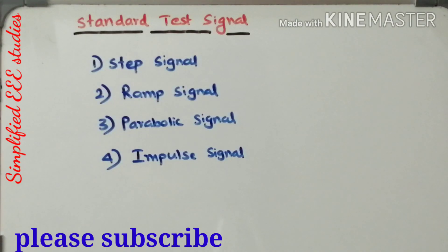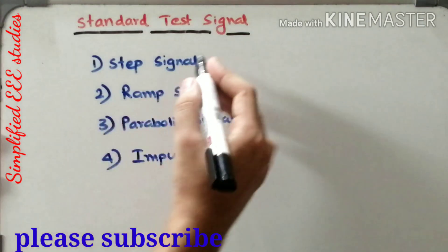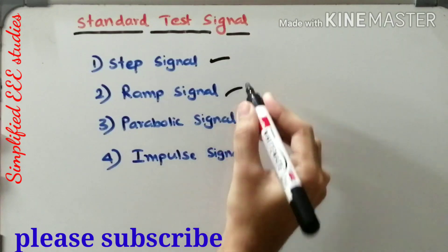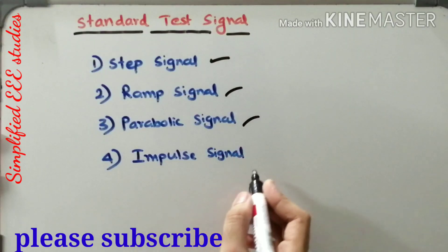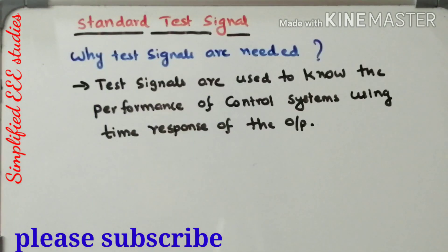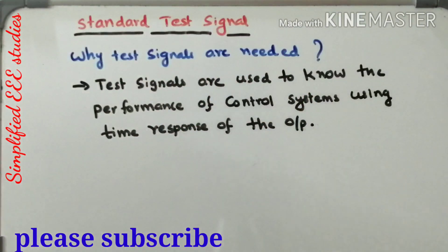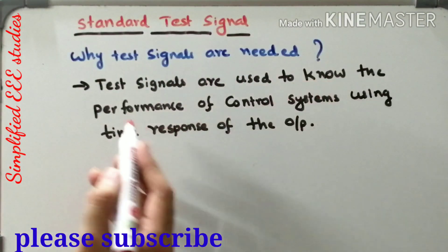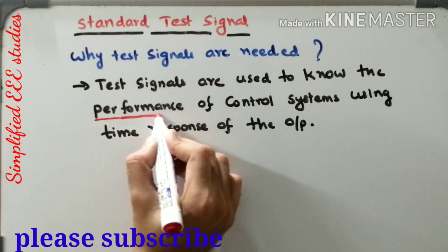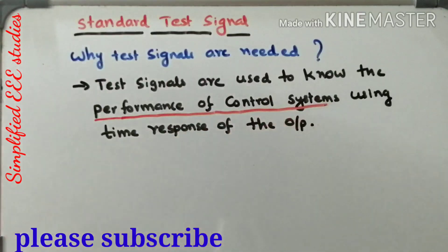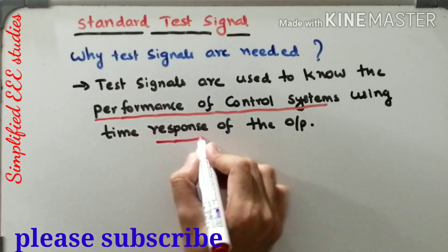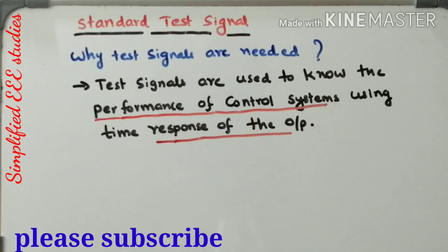Hello all! In this session I will be discussing the most important standard test signals used in control systems. The first one is the step signal, second is the ramp signal, then the parabolic signal, and finally the impulse signal. Before having individual discussion on each, why are test signals required? Test signals are used to know the performance of a control system using the time response of the output.